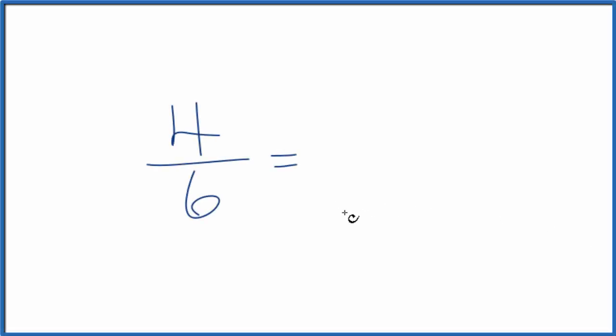Let's take a look at a few equivalent fractions for four sixths. That's four over six. So what we're trying to do is find fractions that have a different numerator and denominator, but they have the same value as four sixths.